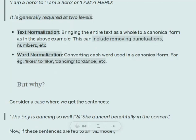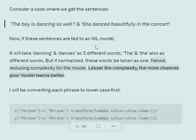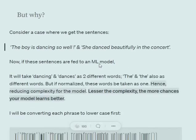For example, we have tenses attached with each word — dancing, danced, dances — though they are from the same family. So in word normalization we bring all these words to 'dance', converting them into their canonical form.